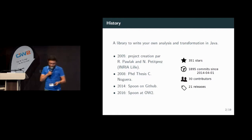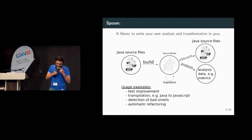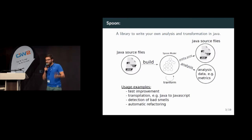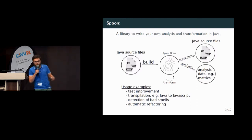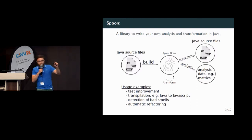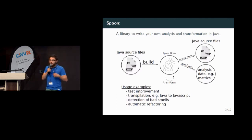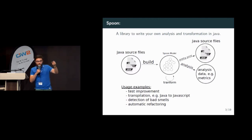Let's go to what it's called. I will present first of all an overview of Spoon. So Spoon is a library to write your own analysis and transformation in Java. Spoon takes Java source files as input and builds the Spoon model, which is a tree.